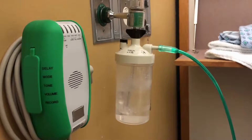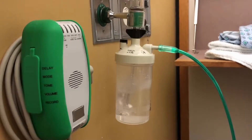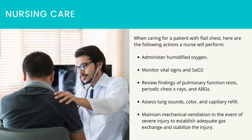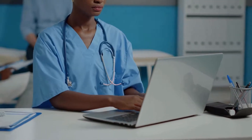Nursing care. When caring for a patient with flail chest, here are the following actions a nurse will perform: administer humidified oxygen, monitor vital signs and SAO2, review findings of pulmonary function tests, periodic chest x-rays and ABGs, and assess lung sounds, color and capillary refill.